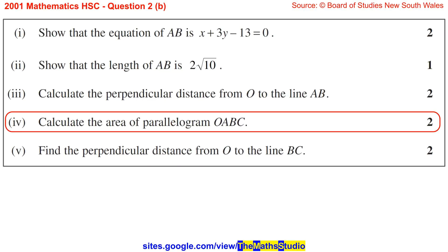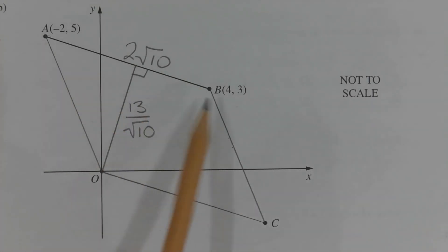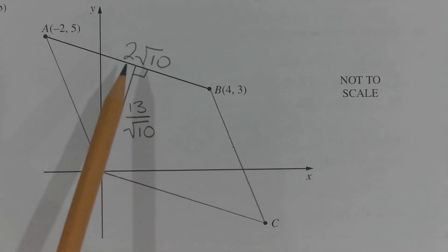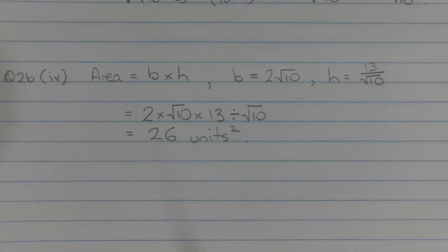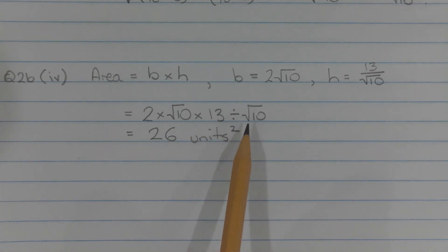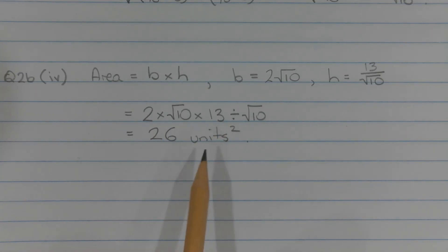Part 4: Calculate the area of parallelogram OABC. Applying the formula base times height, the base is interval AB, which is 2 root 10 units, and the perpendicular height is 13 over the square root of 10, found in part 3. Multiplying these together: area equals 2 times root 10 times 13 divided by root 10. The square root of 10 cancels, leaving 2 times 13, which equals 26 square units.